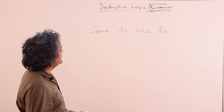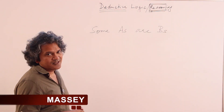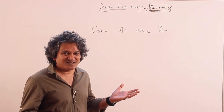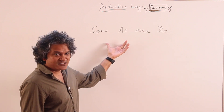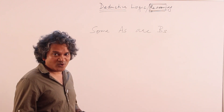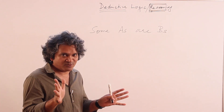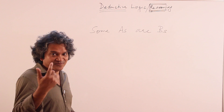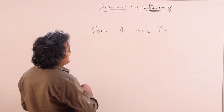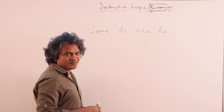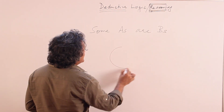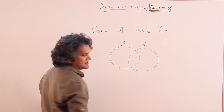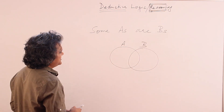Have a look at this statement: 'Some A's are B's.' Let me ask you, what is the meaning of this statement? You might think this is such an obvious statement, but please pause the video, think about it, come up with your answer, and then let's see if yours matches with mine. There are various ways of representing this visually, but the most basic way — the way which will almost never be wrong — will be this.